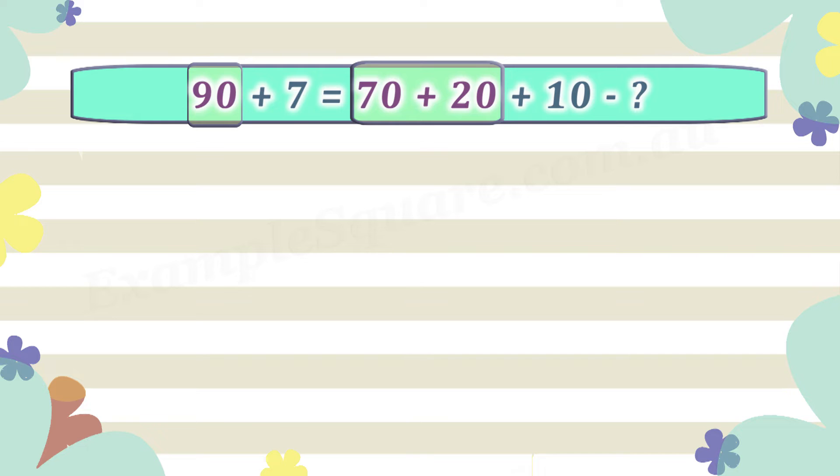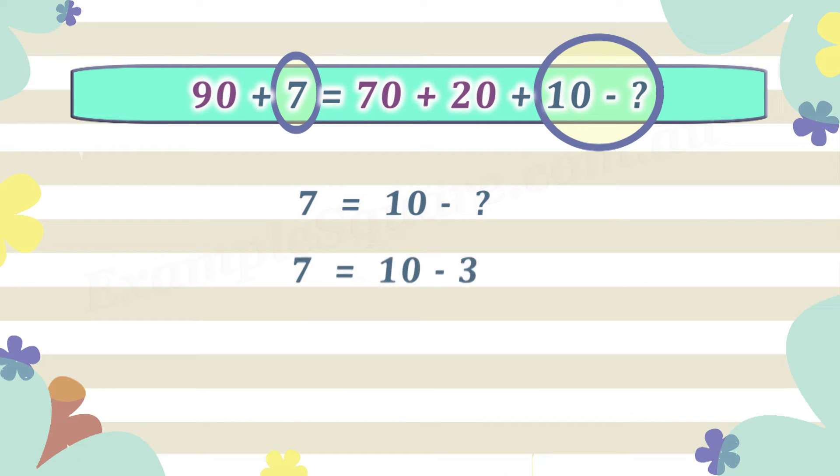That leaves 7 on the left side and 10 minus the unknown value on the right side. So for the equation to balance on both sides and the left side equals the right side, 7 should equal 10 minus the unknown value. 10 minus 3 equals 7, so the unknown value should be 3.